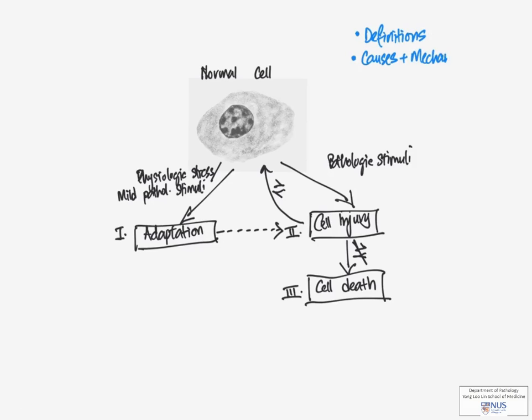So what we're going to look at is the definitions, causes and mechanisms of cell injury, and finally, the morphology of injured cells and also cell death.